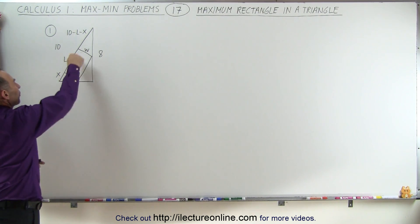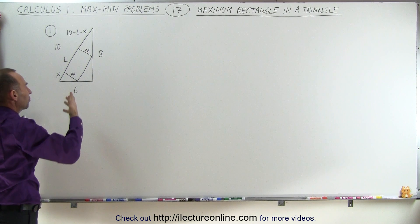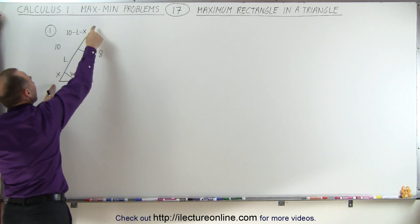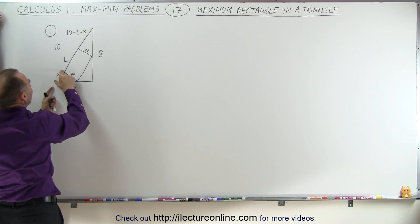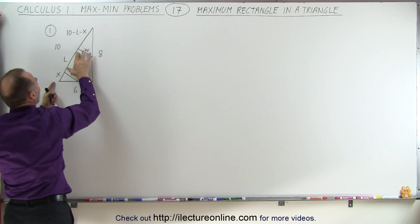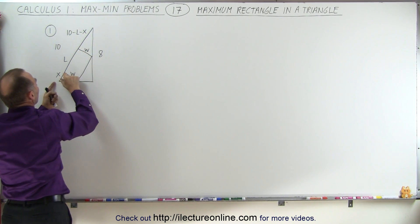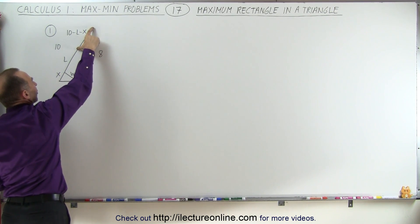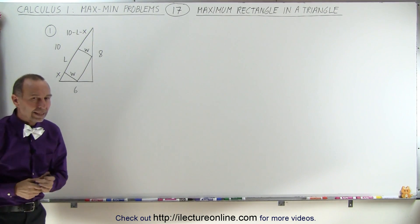If the area of the rectangle is length times width, you can see that if you look at the hypotenuse, and you let this section be equal to x, then this section here will be the total distance, 10, minus the length of the rectangle, minus the value x over here. And that's the value for this distance right there, and we're going to need that.